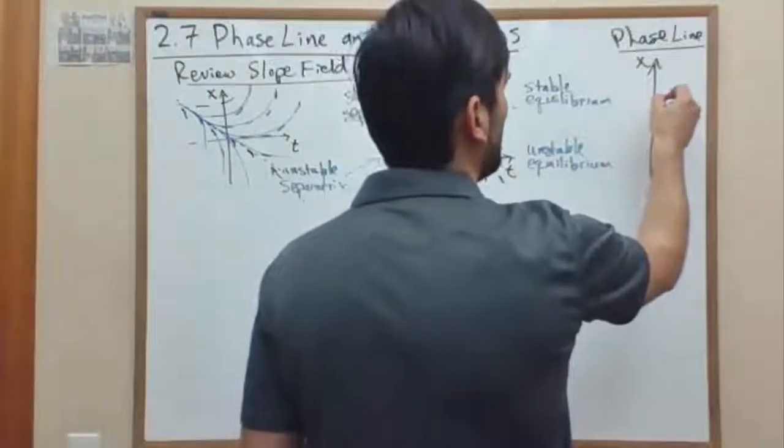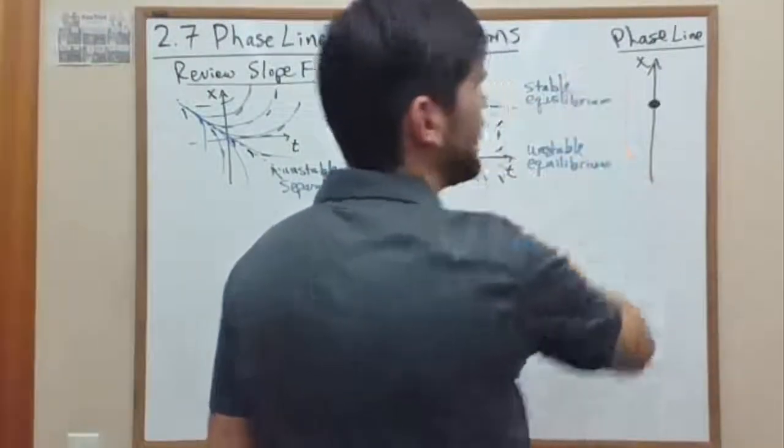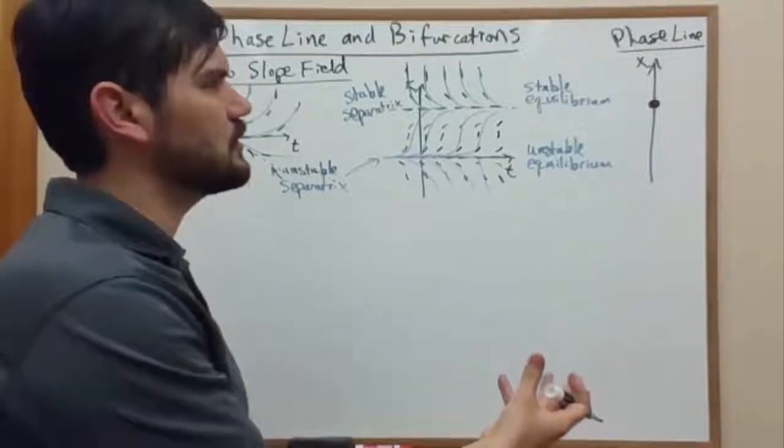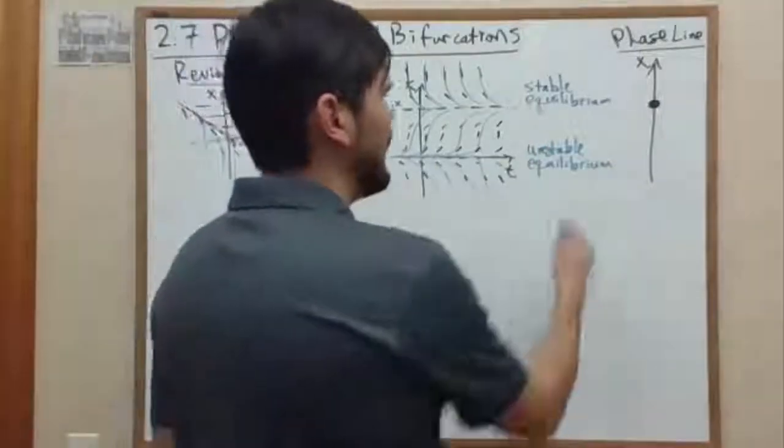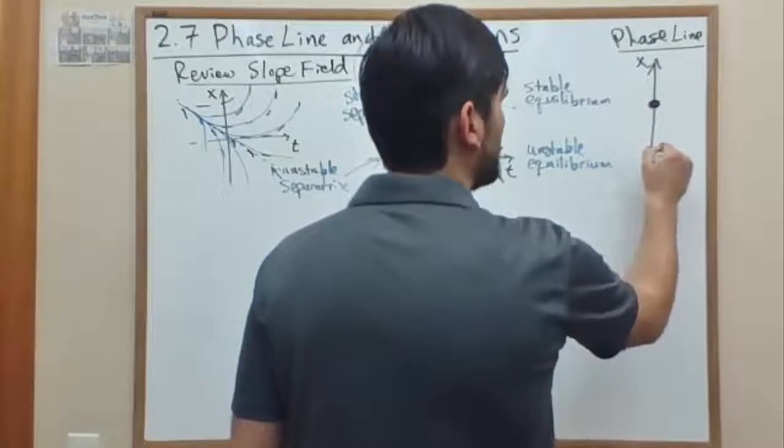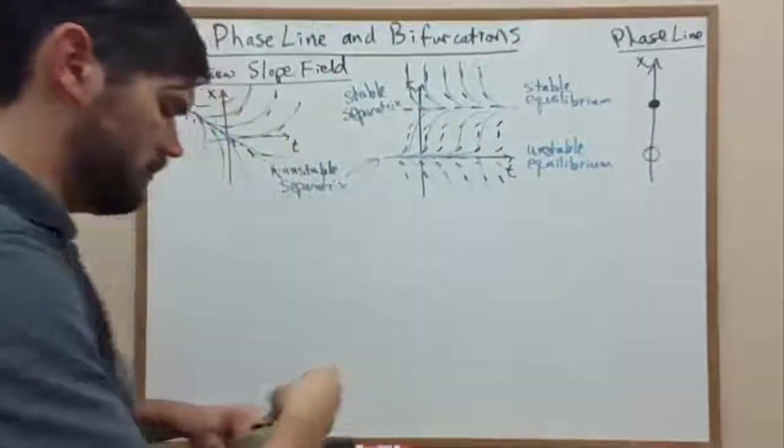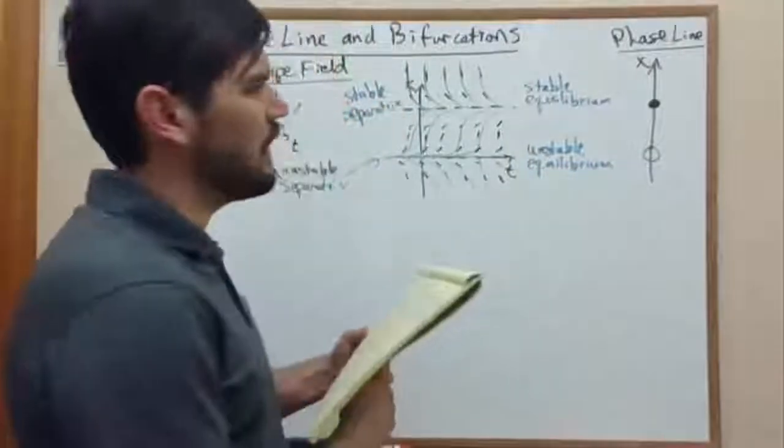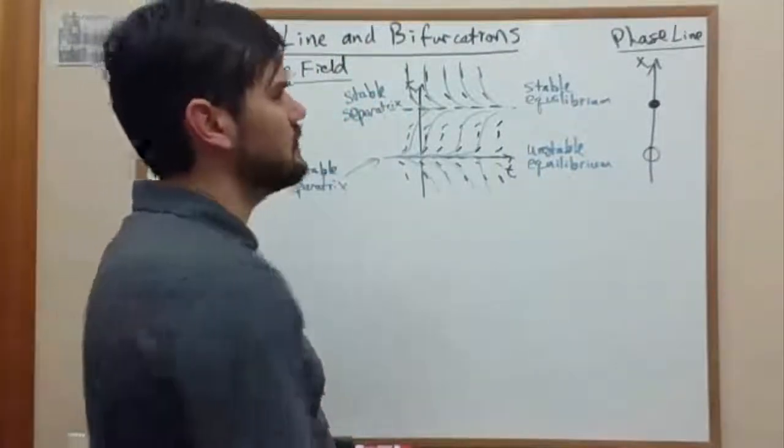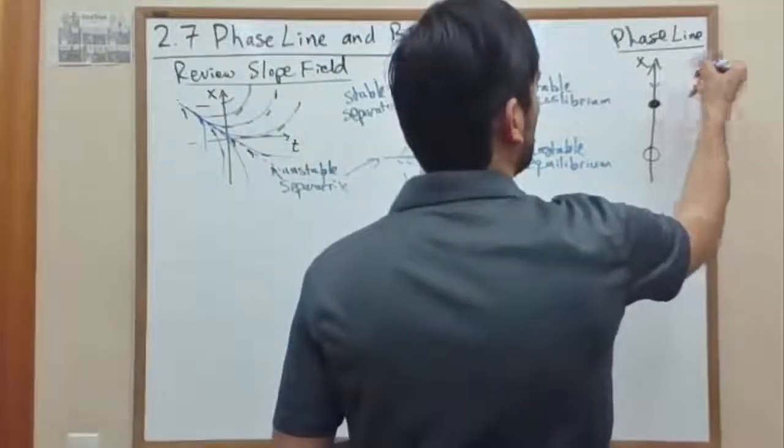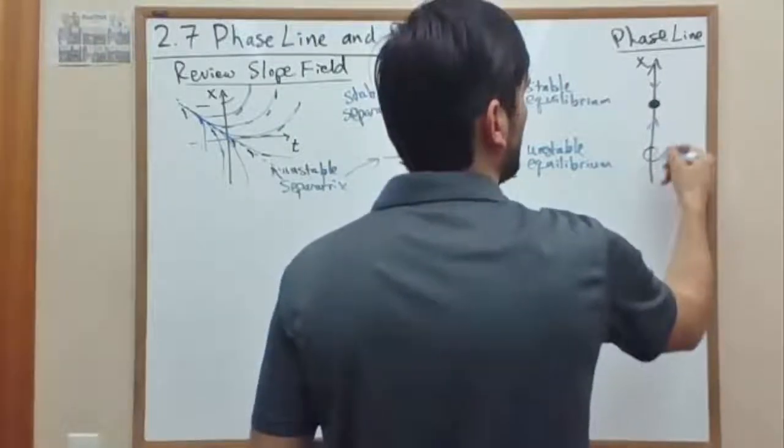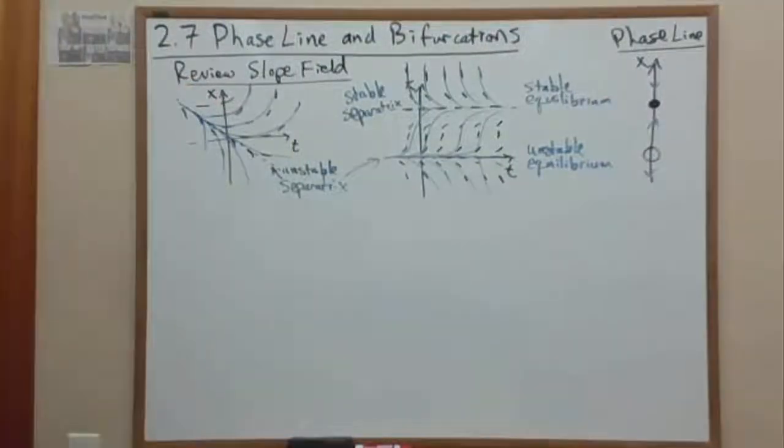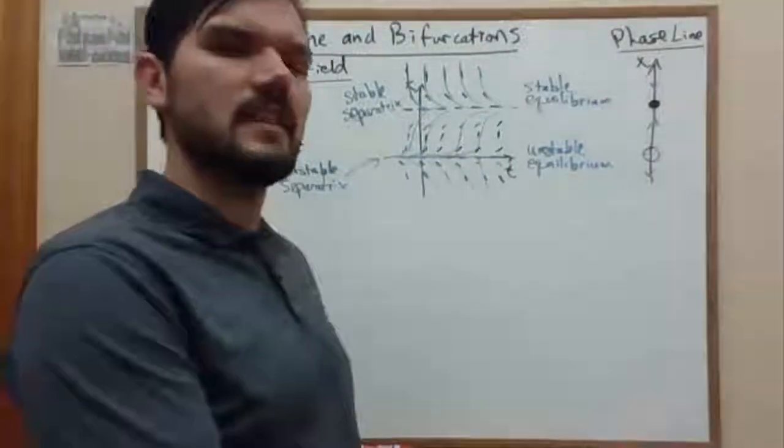Where we have one stable equilibrium point. We just so happen to fill in that point to show that it's coming in towards it. And one unstable equilibrium point. And we can denote the directions the curves are traveling. They're going down to the stable one and up away and down away from the unstable one.